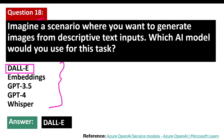Comparing DALL-E with GPT models like GPT-4 or GPT-4o or O3: those GPT models are excellent at understanding and generating text and code, whereas DALL-E is made to create images.